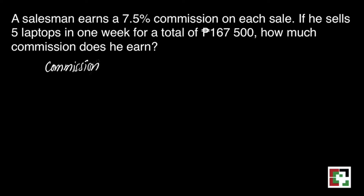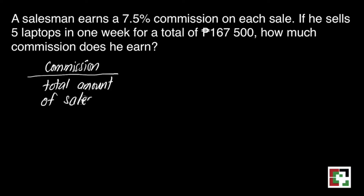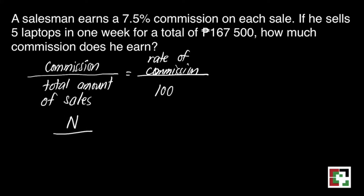To solve this problem, we'll be using this formula: Commission over total amount of sales is equal to the rate of commission over 100. We will just substitute — that's N over 167,500 is equal to 7.5 over 100.